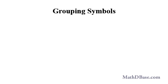Grouping symbols are used to indicate a number, numbers, or a combination of numbers and variables that are to be thought of as a separate group in carrying out an operation or procedure.